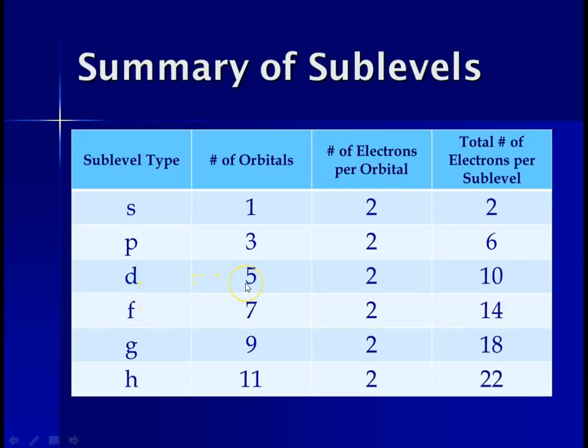The D sublevel has five orbitals. Each orbital can hold two electrons. Five times two is ten. And the F sublevel has seven. Seven times two is fourteen. G would be nine times two is eighteen. And H, eleven times two is twenty-two. So this is telling you at each of these sublevels the maximum number of electrons that can be held based upon the number of the orbitals and recalling that each orbital can only hold two electrons.